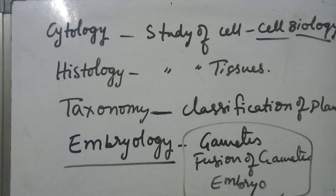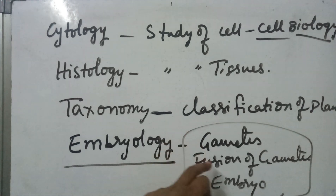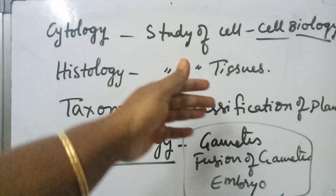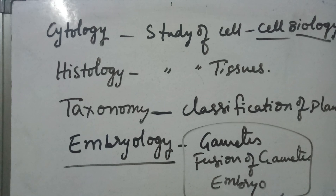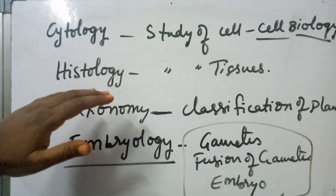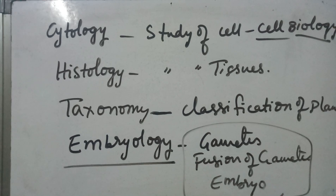Embryology includes reproduction and development of the embryo, all covered in the first year textbook. Under embryology, we will discuss sexual reproduction in plants — how gametes are formed and how they fuse. The major chapters in first year are morphology, cytology, histology, and anatomy. Histology and anatomy come together — anatomy covers internal morphology, and histology as a separate branch deals with tissues. Taxonomy and embryology are also covered.